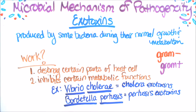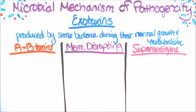Microbial mechanisms of pathogenicity: exotoxins. Exotoxins are produced by some bacteria during their normal growth and metabolism. They work in two ways: one, they destroy certain parts of the host cell, and two, they inhibit certain metabolic functions. Examples include cholera exotoxins and pertussis exotoxins. There are three types of exotoxins: AB toxins, membrane disrupting toxins, and super antigens.